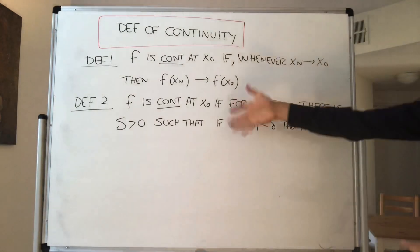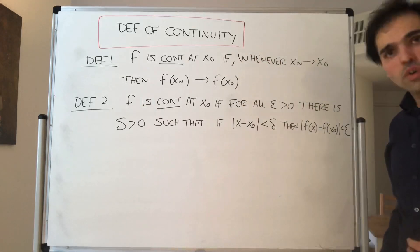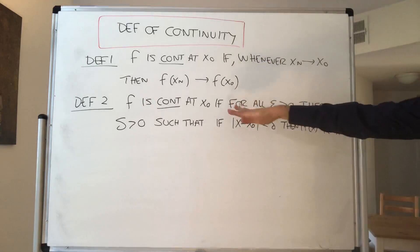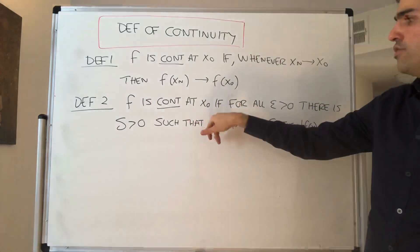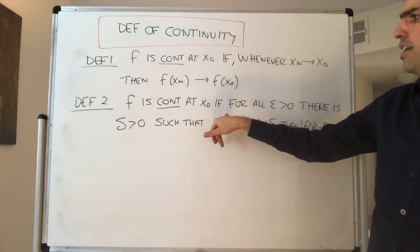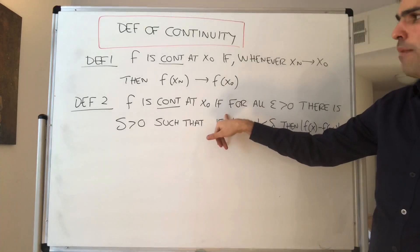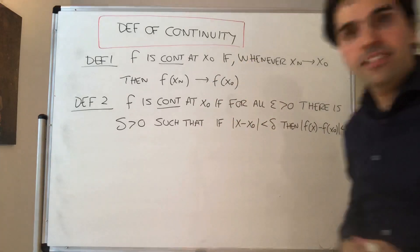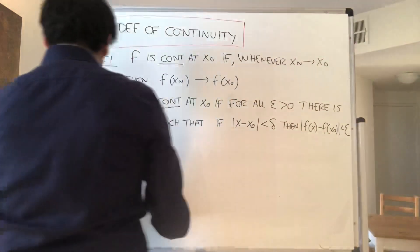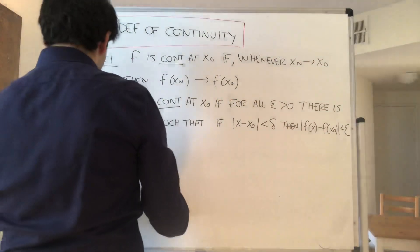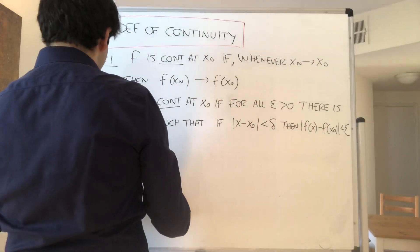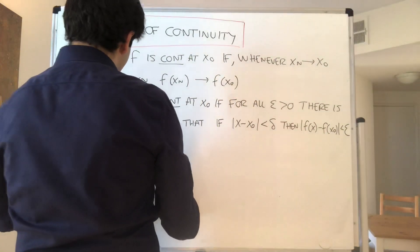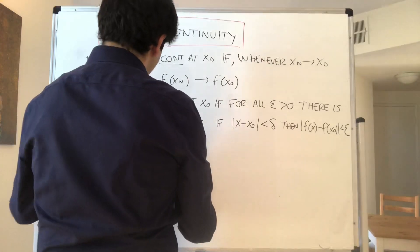Our goal is to show that those two are equivalent. Let's do the easier direction first: let's show that epsilon-delta implies the sequence definition, i.e., definition two implies definition one.